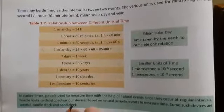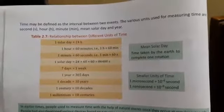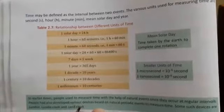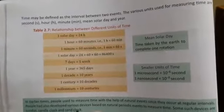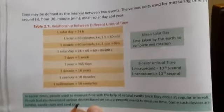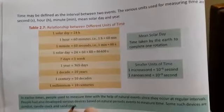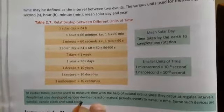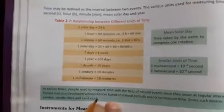Time may be defined as the interval between two events. The various units used for measuring time are second, hour, minute, mean solar day, and year. Table 2.7 here, it is given in this table, the relationship between different units of time is mentioned.